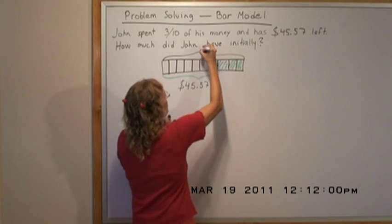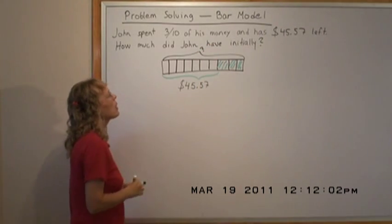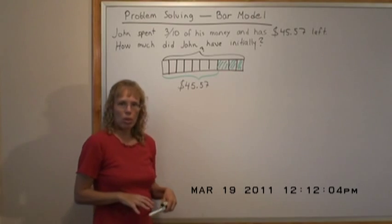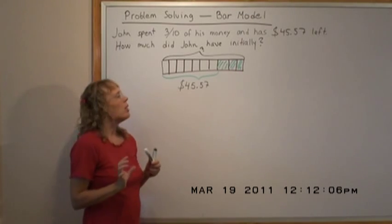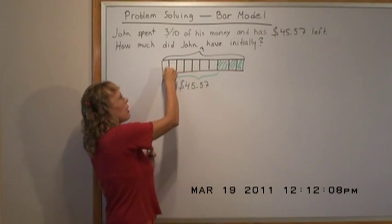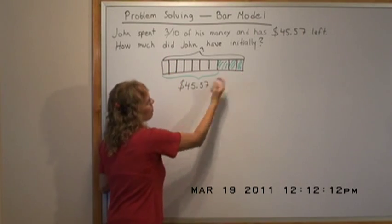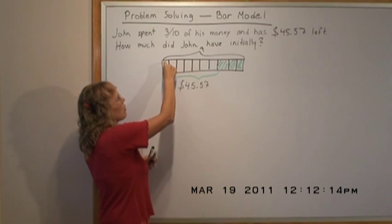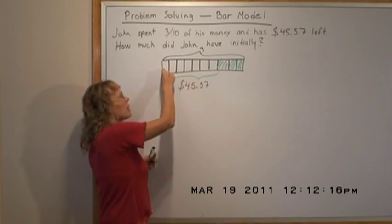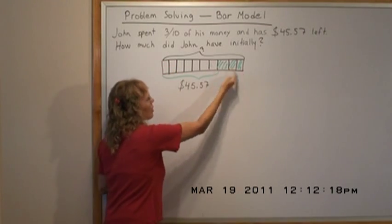This is our unknown. These kinds of problems are almost always solved the same way: first find how much one little part is, then from that you can find the whole. If I find how much one part is, I multiply by ten to get the ten parts of the whole thing.